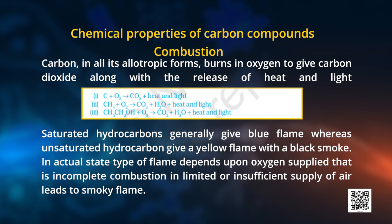Carbon in all its allotropic forms burns in oxygen to give carbon dioxide along with release of heat and light. You have to take note that saturated hydrocarbons generally give a blue flame, whereas unsaturated hydrocarbons give a yellow flame with black smoke. In actual state, the type of flame depends upon oxygen supplied — incomplete combustion in limited or insufficient supply of air leads to a smoky flame.